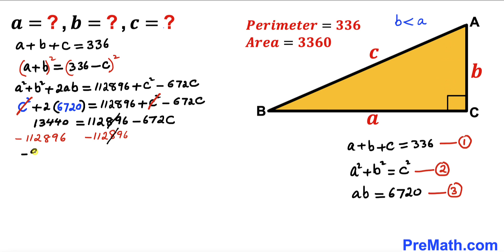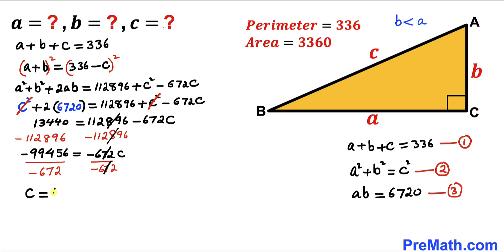Subtracting 112,896 from both sides, we get negative 99,456 equals negative 672 times c. Dividing both sides by negative 672 to isolate c, we find that c equals 148. So our side length c is 148 units.